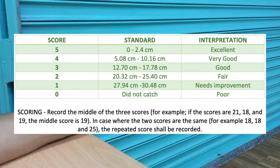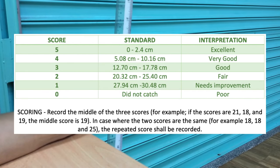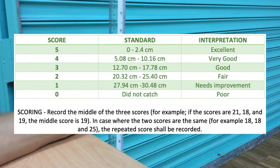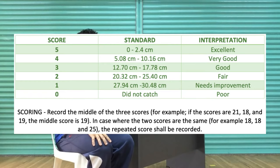Record the middle of the three scores. For example, if the scores are 21, 18, and 19, the middle score is 19. In case where two scores are the same — for example, 18, 18, 25 — the repeated score shall be recorded.